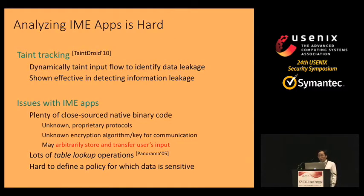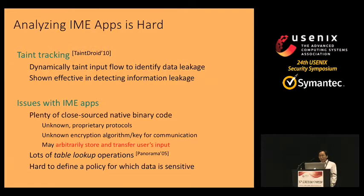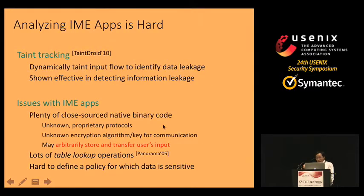An intuitive approach would be using analysis tools like taint tracking to detect and stop leaking of user-sensitive information. However, while such approaches are shown to be effective in many scenarios, there are still several issues preventing them from being effective for third-party IME apps. First, there is plenty of closed-source native binary code, including unknown proprietary protocols and encrypted code whose encryption keys are unknown.